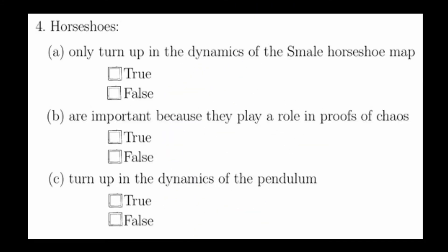Question 4 is a series of questions about a generalized horseshoe. Part A asks if horseshoes only turn up in the dynamics of the Smale horseshoe map, and this is false. For example, horseshoes show up in the dynamics of the pendulum. This actually answers part C as well. Part B states that horseshoes are important because they play a role in the proof of chaos, and this is true as well. See the lecture for more details on this.